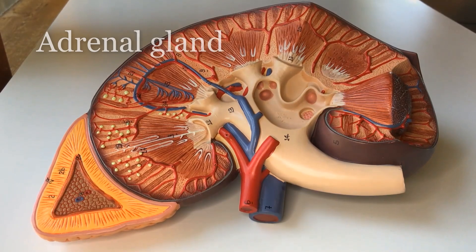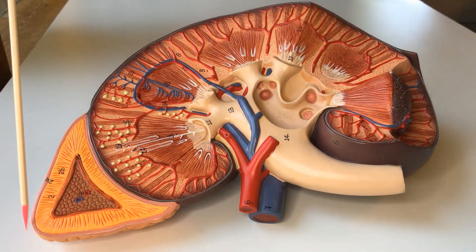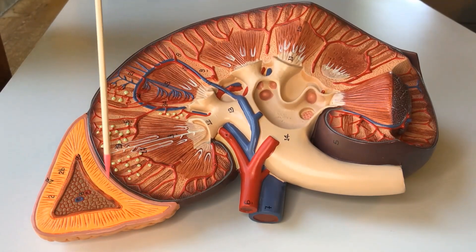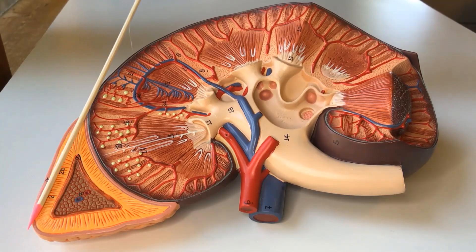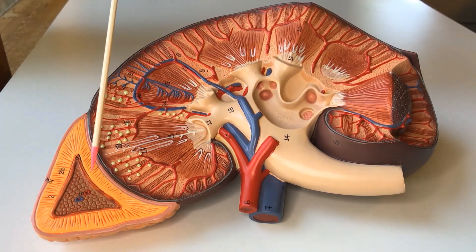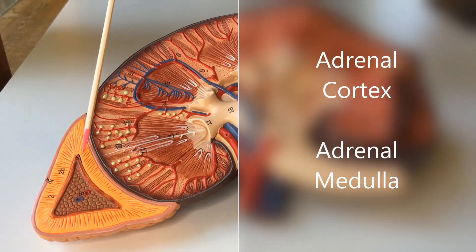As I promised, we have a larger view of the adrenal gland over here on the left side of the frame. And now we see it cut through so we can see the two different main sections: the adrenal cortex and the adrenal medulla.